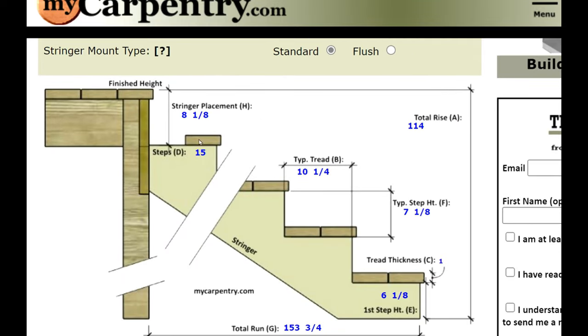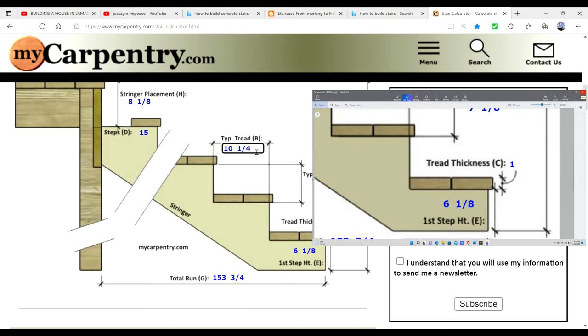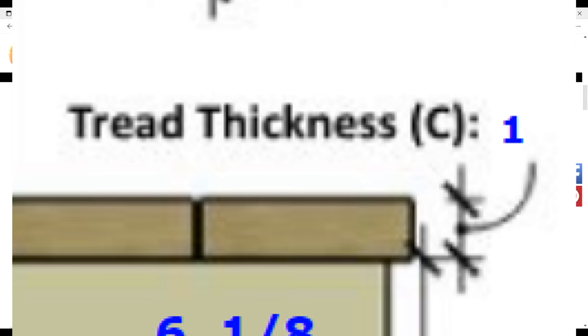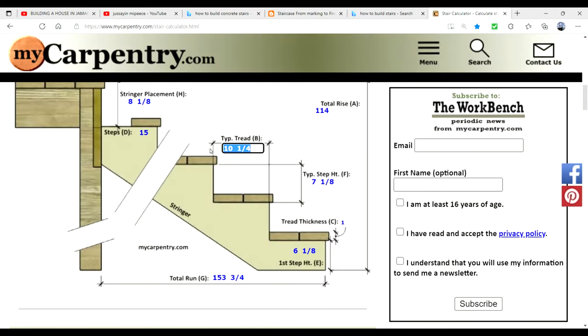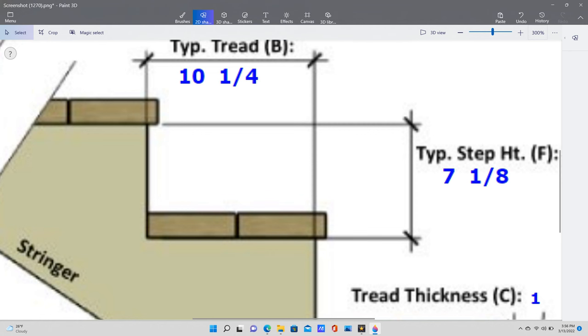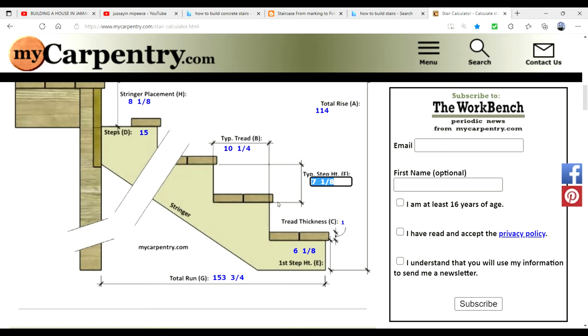This is your first stair height and that as we said is 6 and 1 eighth. Now that is of course minus the tread thickness. And the typical riser height is 7 and 1 eighth. And of course that includes the tread thickness.